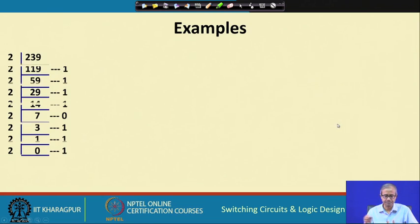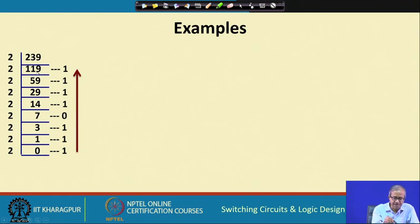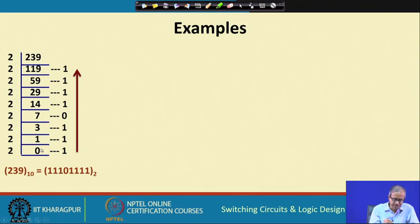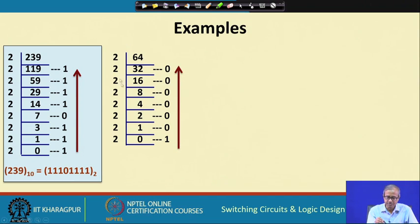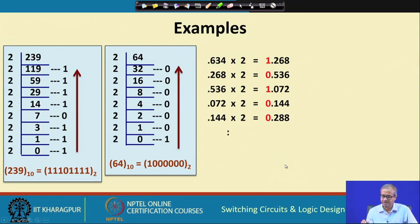For example, to convert 239 to binary: divide by 2 repeatedly — 239÷2 gives 119 remainder 1, then 59 remainder 1, 29 remainder 1, and so on until you reach 0. Reading the remainders in reverse order gives 11101111₂. For 64: repeatedly dividing by 2 gives all-zero remainders until the final remainder of 1, so reading in reverse gives 1000000₂.